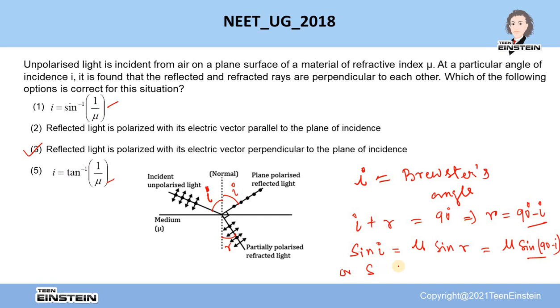So this would give you mu into cos I. So this will give you sin I equals mu cos I, or tan I will be equal to mu.